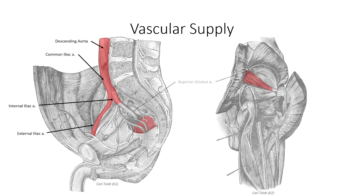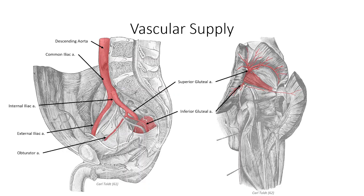First is the superior gluteal artery, which passes over the superior border of the piriformis muscle, primarily supplying the gluteus medius, minimus, and tensor fasciae latae muscles. Two other branches from the same trunk include the obturator artery — which passes through the obturator canal to enter the medial compartment of the thigh — and the inferior gluteal artery. The inferior gluteal artery passes inferior to the piriformis muscle to primarily supply the gluteus maximus.